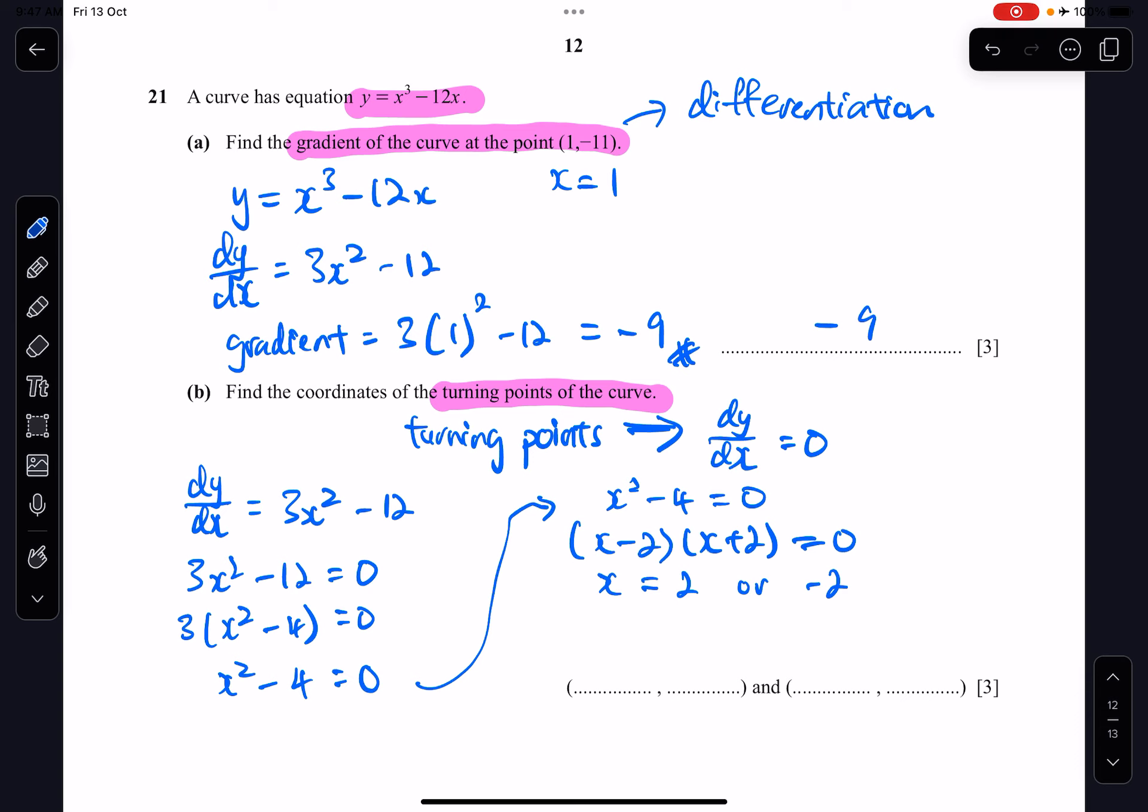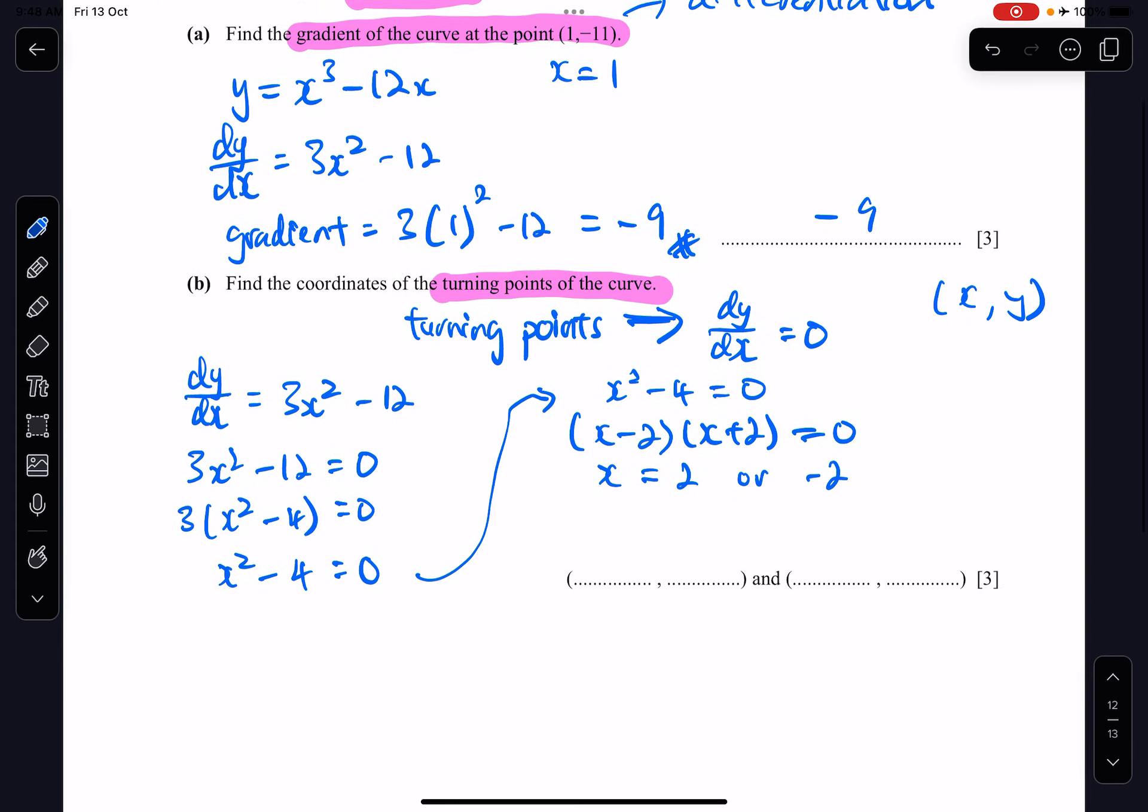But because I want to find the turning point, it will be in the form of x comma y. So I need to find the corresponding y value of the turning point. So I need the equation of the curve again.